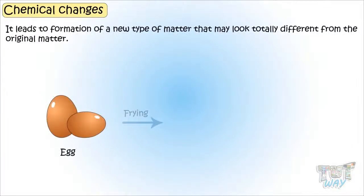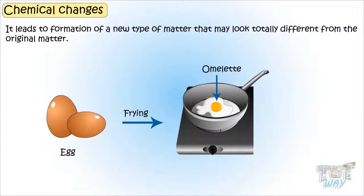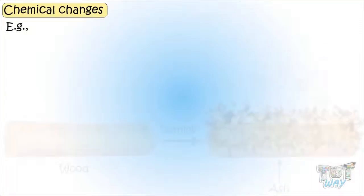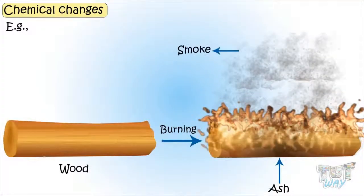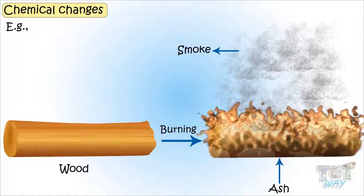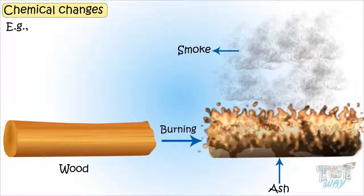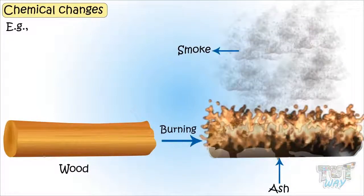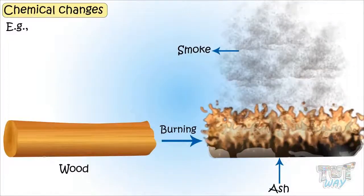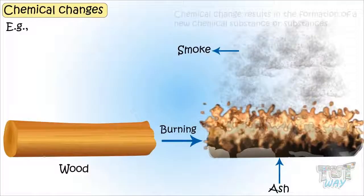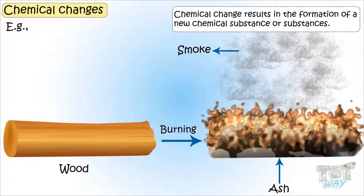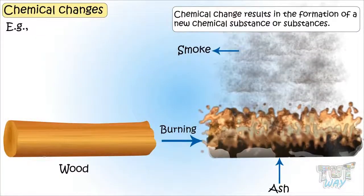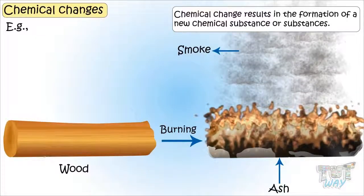Chemical changes lead to the formation of new types of matter that may look totally different from the original matter. For example, ash and smoke are produced when wood is burnt, and they look totally different from wood. Chemical changes result in the formation of a new chemical substance or substances.